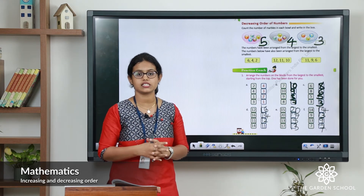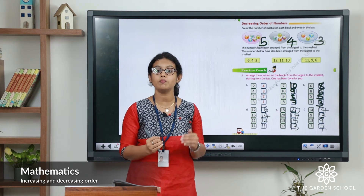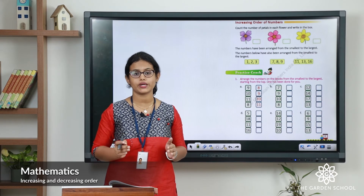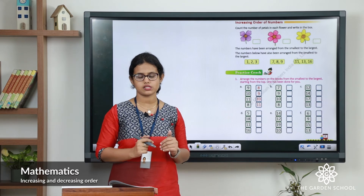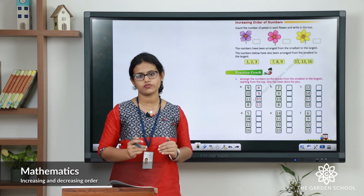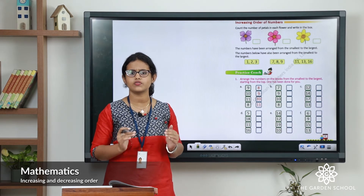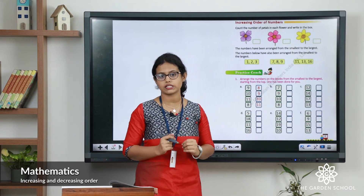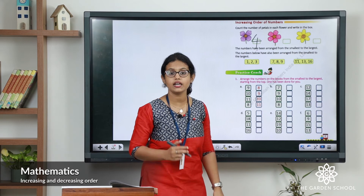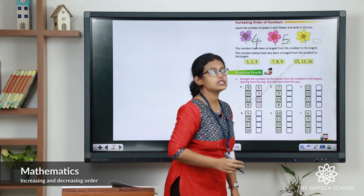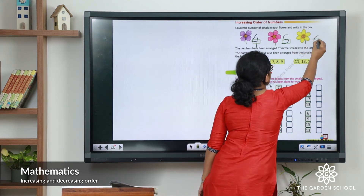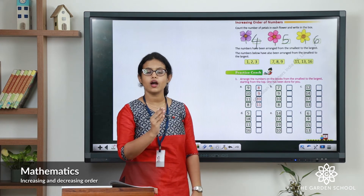So we have learned about decreasing order — when you arrange numbers from largest to smallest. Now take the next page, page number 27: increasing order of numbers. Here you can see three flowers and you have to count the number of petals in each flower. First flower: one, two, three, four — four petals. Next flower: one, two, three, four, five — five petals. Third flower: one, two, three, four, five, six — six petals. So four, five, six — this is in increasing order.